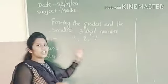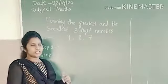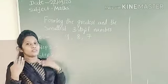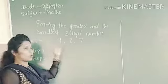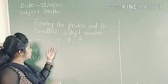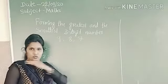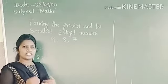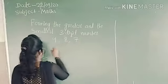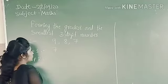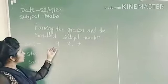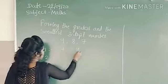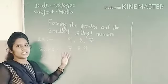When we have to form the smallest 3-digit number, you always start from the smaller number. When you have to form the smallest number, first you have to arrange the numbers in ascending order. In these 3 digits, which digit is the smallest number? 7 is the smallest number, so I will write 7. Among the remaining 2, which digit is the smallest? 8, then 9.